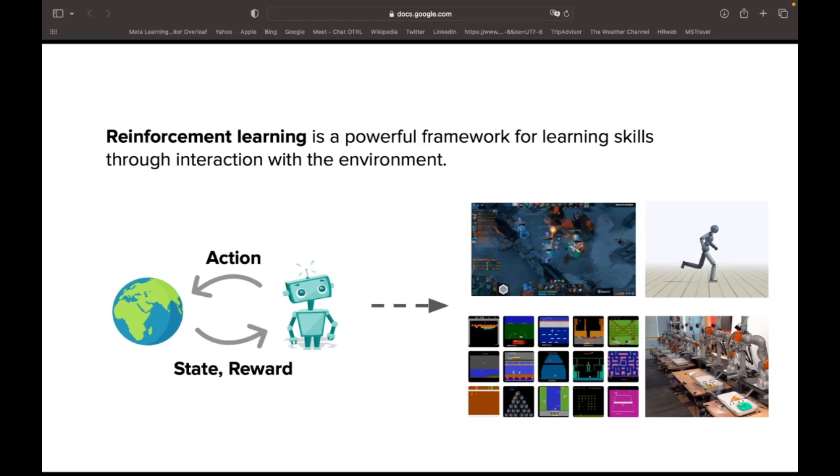Reinforcement learning is a powerful paradigm for learning complex behaviors purely through trial and error interaction with an environment. It has been shown to be effective on a variety of domains, ranging from games like Dota and Atari to character control and even robotics. Let us try to understand what makes RL work and what can make it difficult.